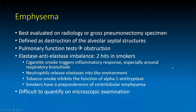Normally, alpha-1 antitrypsin, which is produced in the liver and is present in the circulation and which can inhibit the effects of these elastases from the immune cells, is actually inhibited by tobacco smoke fairly specifically. This ultimately leads to a significant imbalance of elastase activity versus the inhibitory elastase activity mediated by alpha-1 antitrypsin.